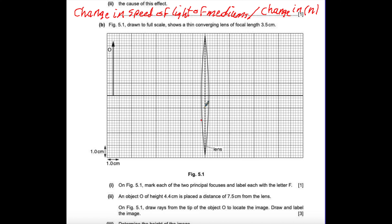On figure 5.1, mark each of the two principal focuses and label each with the letter F. The focal length F is the distance between the optical center and the principal focus. F equals 3.5 cm, and each box equals 1 cm. Starting from the middle, which is the optical center: 1, 2, 3, and 3.5 will be in the middle of the next box. So this is F on one side, and from the other side: 1, 2, 3, and 0.5 — in the middle. So this is F on the other side.